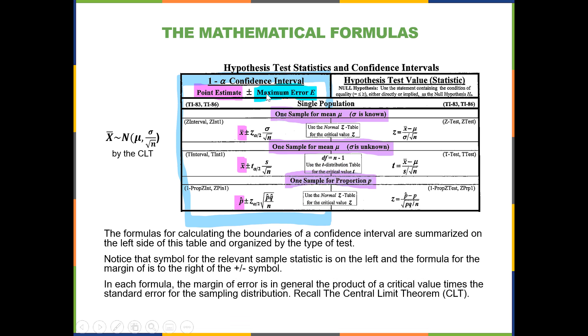And on the other side, you have the maximum error, E, or also known as the margin of error, or the EBM, the error bound for the mean. They all are different ways of saying the same thing. And that is calculated taking the critical value times the standard error.